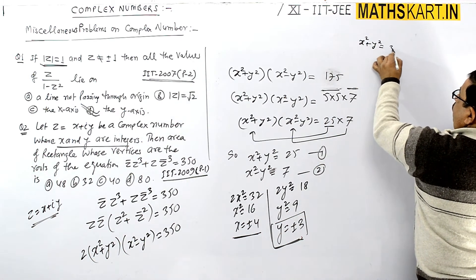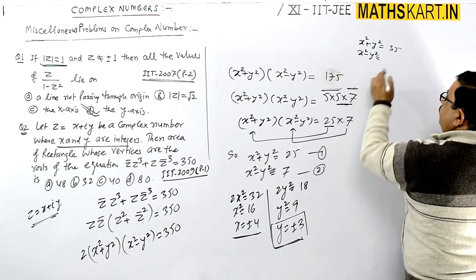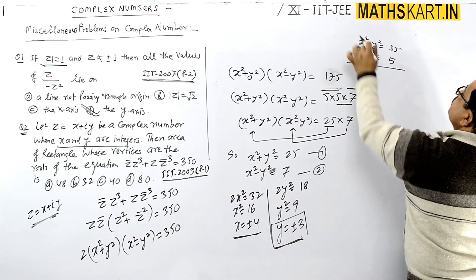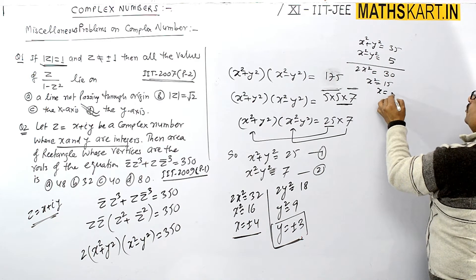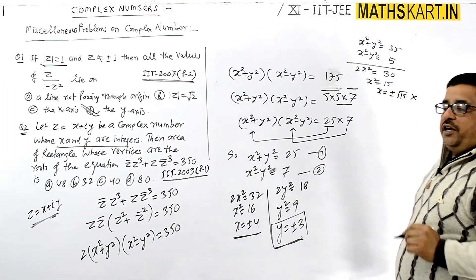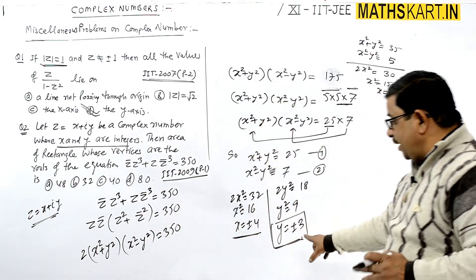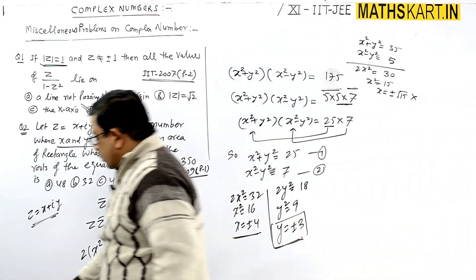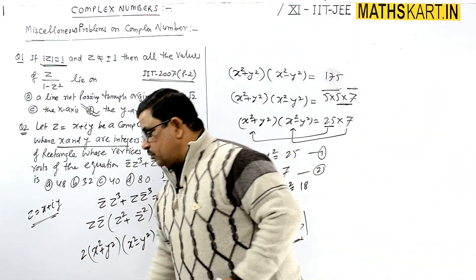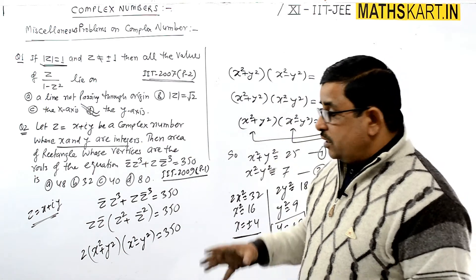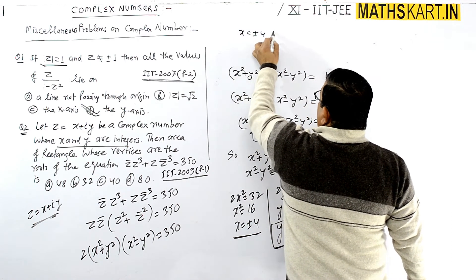Now checking the second possible factorization: x²+y² equals 35 and x²-y² equals 5. Adding gives 2x² equals 40, so x² equals 15, meaning x equals plus or minus root 15, which is not an integer. So this second case fails and is not applicable.